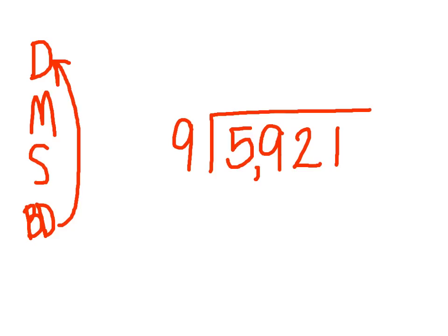Let's look at the first problem: we have 5921 divided by 9. The first thing you need to do is think how many times does 9 go into 5, and that is 0 times. The 0 goes on top of the house right above the 5. 0 times 9 is 0, subtract it, you have 5.